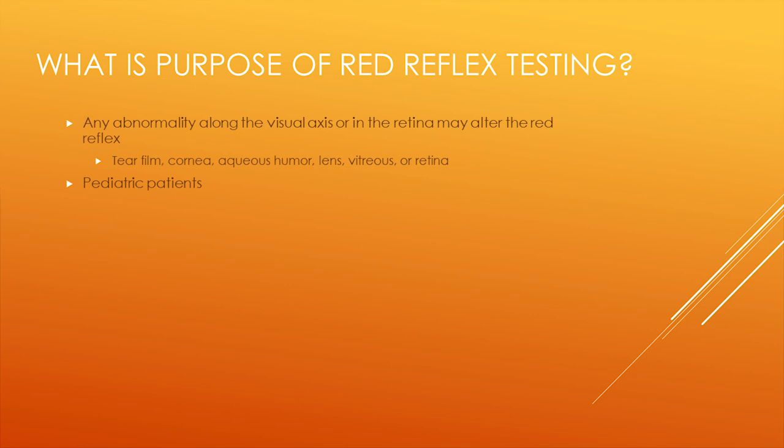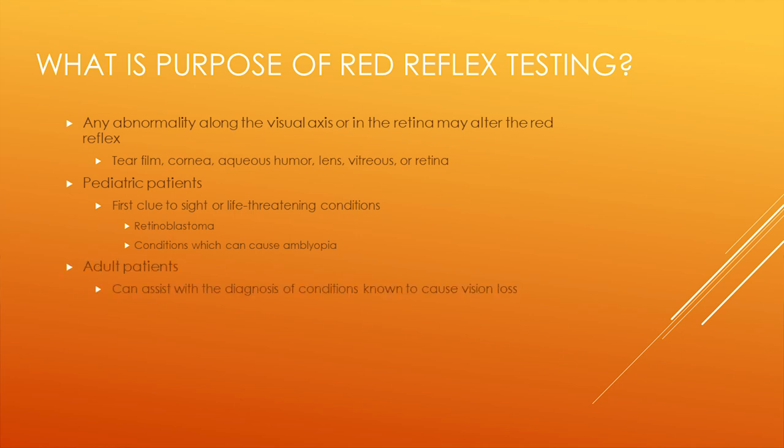In pediatric patients, abnormalities in the red reflex can be the first clue to sight-threatening conditions that cause amblyopia or life-threatening pathologies such as retinoblastoma. Similarly, the red reflex can assist in the diagnosis of conditions causing visual loss in adults.